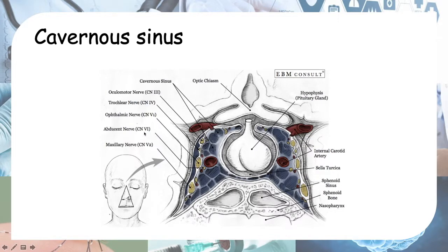Cranial nerve 3 is the oculomotor nerve, cranial nerve 4 is the trochlear nerve, and cranial nerve 6 is the abducens nerve. These three nerves innervate the extraocular muscles of the eye, allowing you to look left, right, up, down, and diagonally.